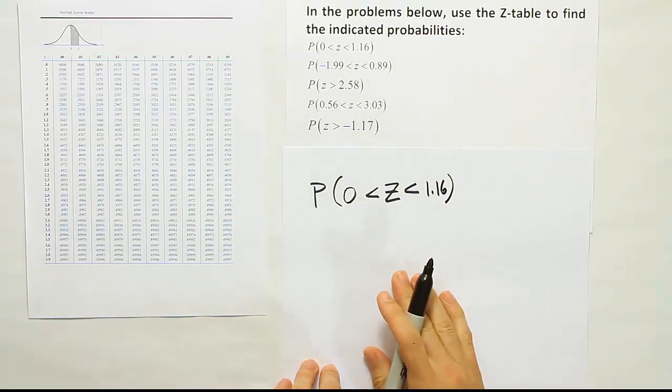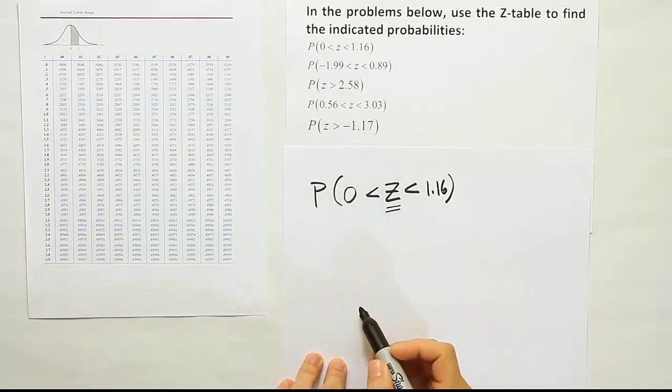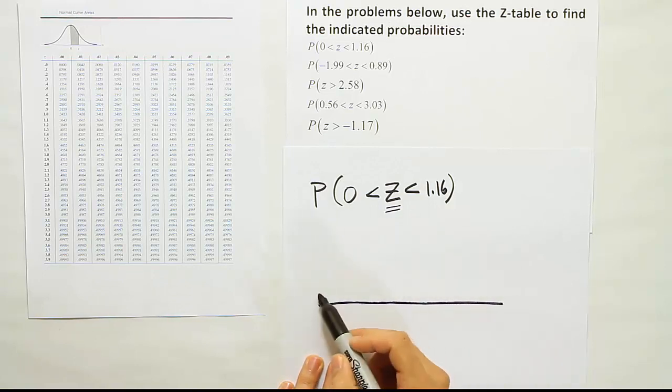Okay, so if I want to figure out that probability, what I want to do is recognize the fact that this is z indicating a standard normal distribution. So I should draw a bell curve as a visual aid.